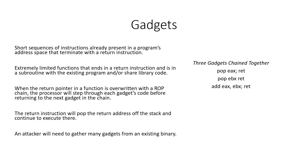the process will step through each gadget's code before returning to the next gadget in the chain. The return instruction will pop the return address off the stack and continue to execute there. An attacker will need to gather these gadgets from an existing binary.